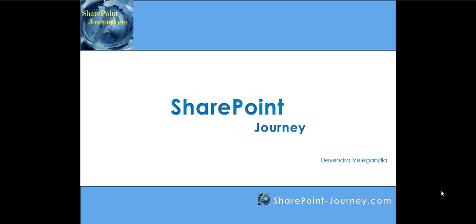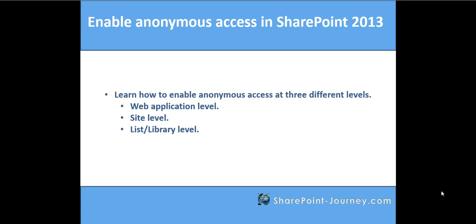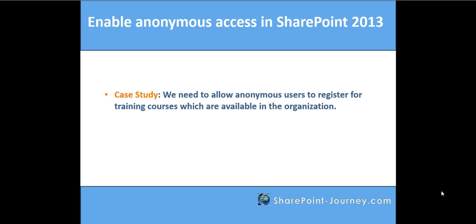Hello, welcome to SharePoint Journey. This is Devendra Velgenla. In this lesson you will learn how to enable anonymous access in SharePoint 2013. To enable anonymous access for your site, you first need to enable it at the web application level, and once we enable it there, you will be able to enable anonymous access at the site level and even at the library level. We'll take a small case study where you want to allow anonymous users to register for trainings happening in the organization. Let's go ahead and do it at the web application level first.